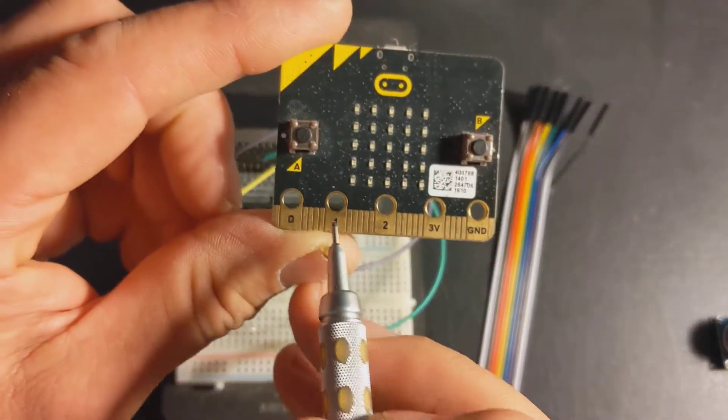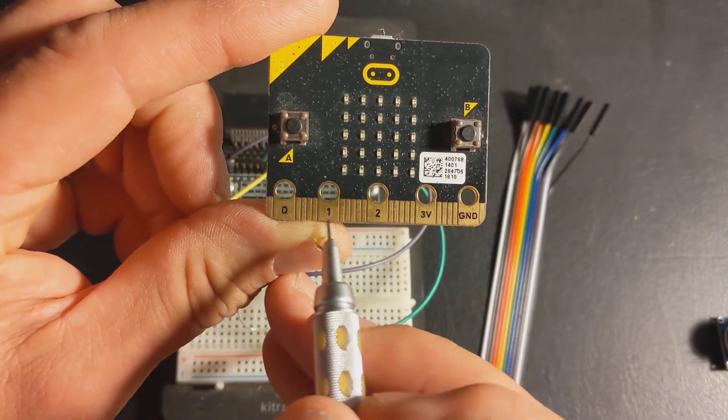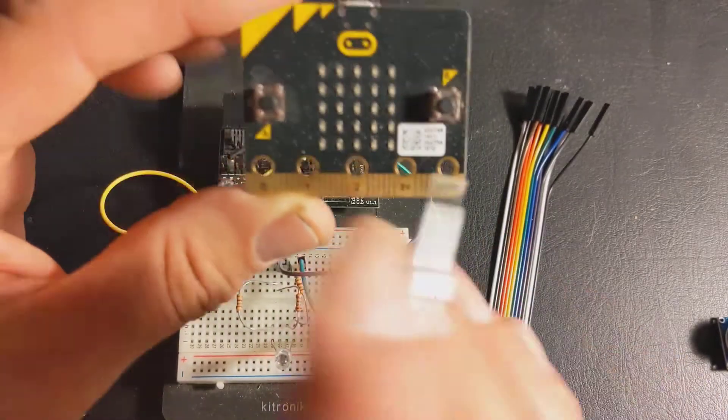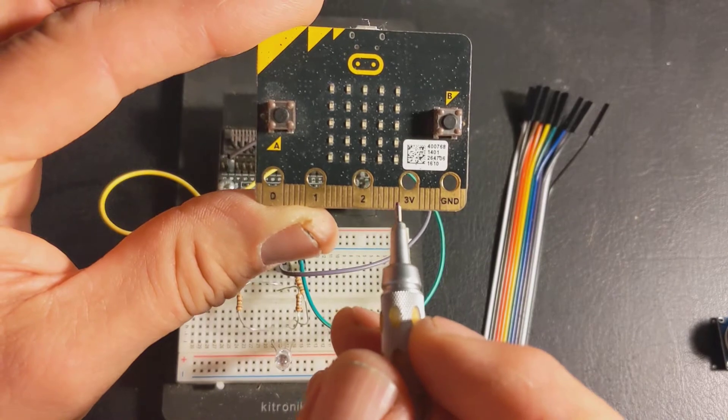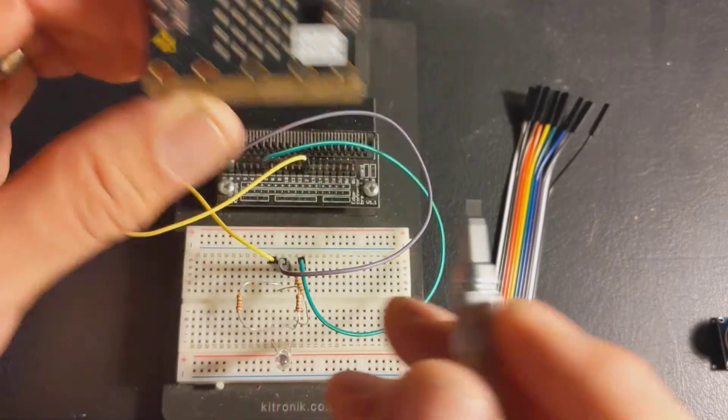If you look closely at the microbit, there are a lot of separate tracks in between those pins. The microbit has actually got quite a few more connections on the breakout board.